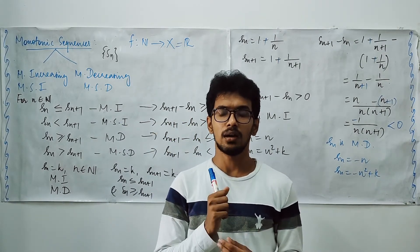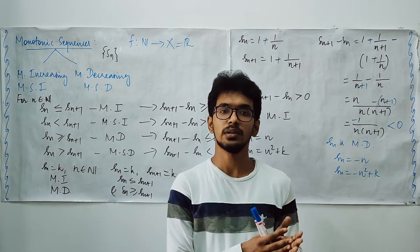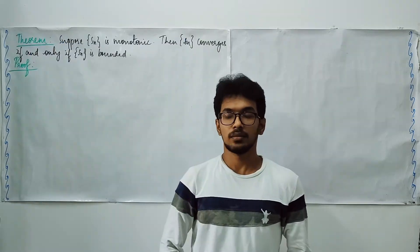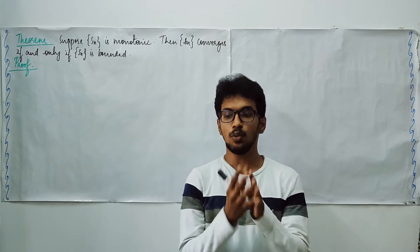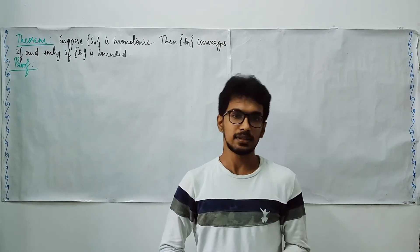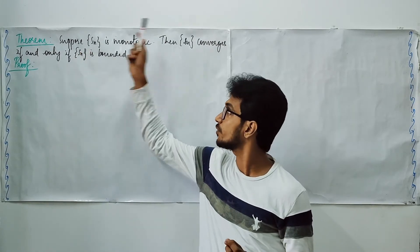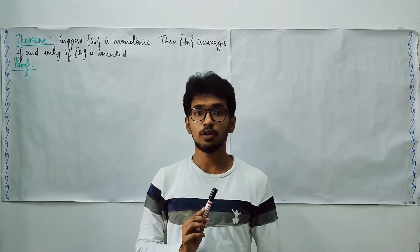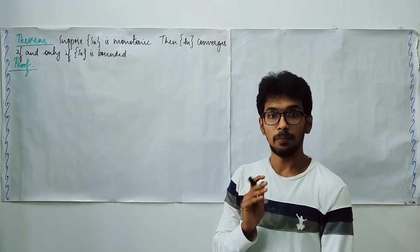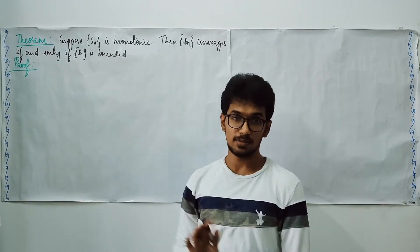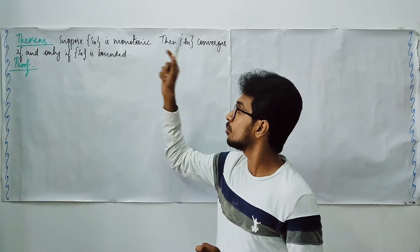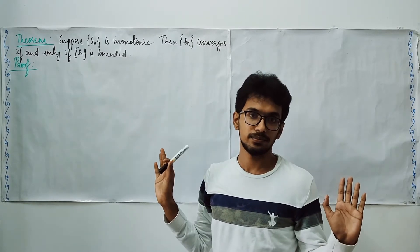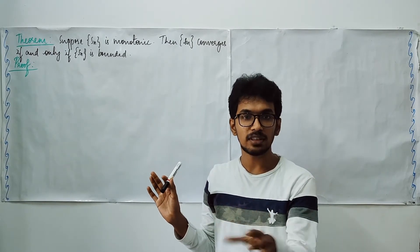Let us now see a theorem which relates monotonic sequences with convergent sequences: when can a monotonic sequence converge? The theorem states that a monotonic sequence is convergent if and only if it is bounded. An important note: the basic assumption throughout is that S_n is monotonic. So whether we assume boundedness and prove convergence, or assume convergence and prove boundedness, S_n being monotonic is always the base assumption. Only for monotonic sequences are we making this claim.